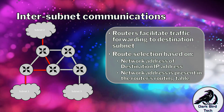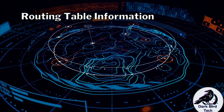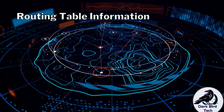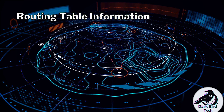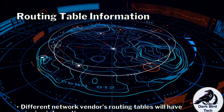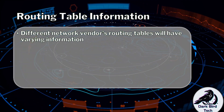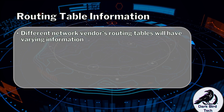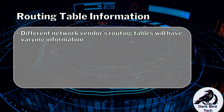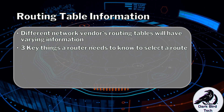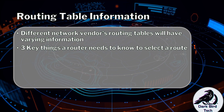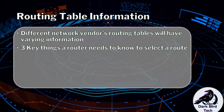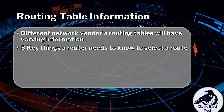Everything revolves around the routing table. Let's check out what's in the routing table and what information is necessary. The different network vendors' routing tables will have varying information, but usually there will be three key things that need to be in the routing table so that a router can select a route for forwarding a packet to an appropriate destination.